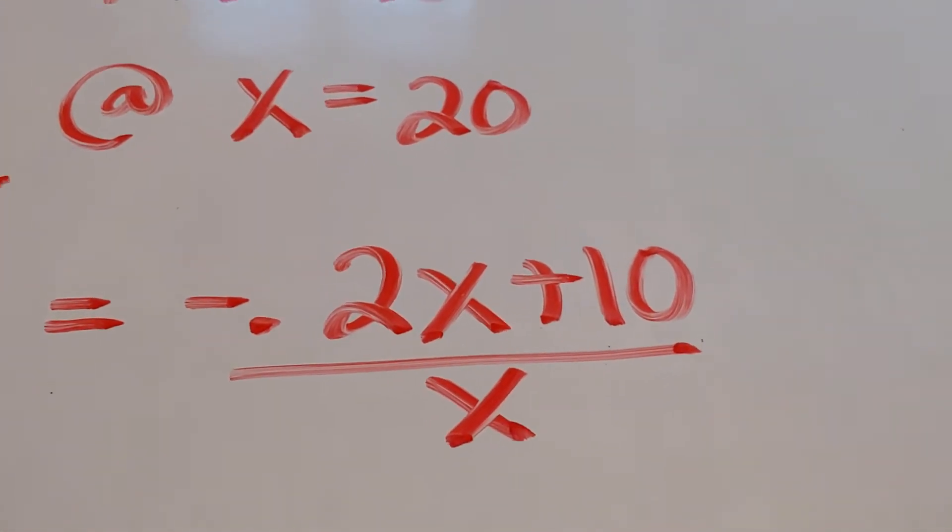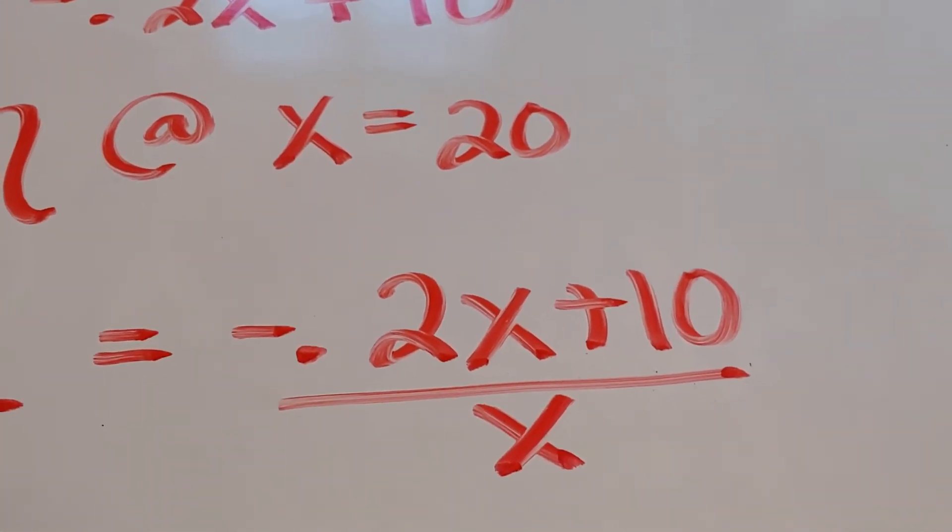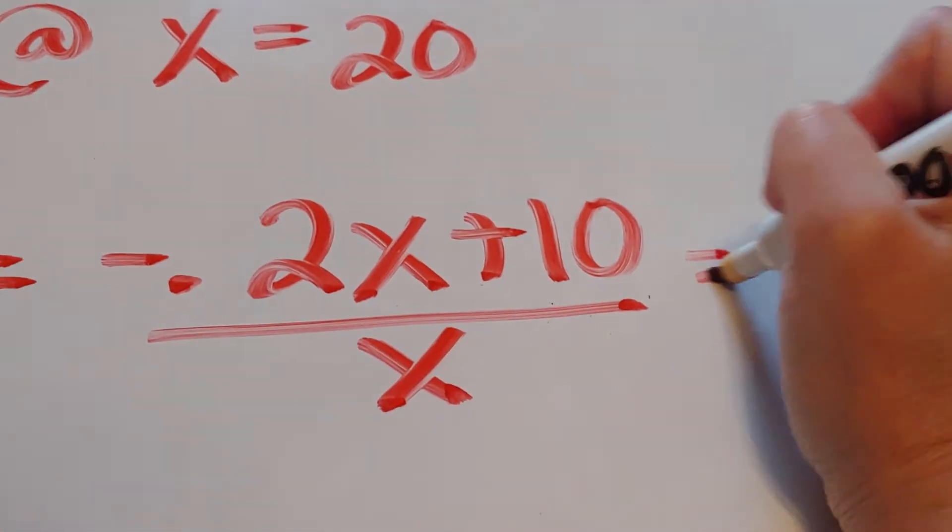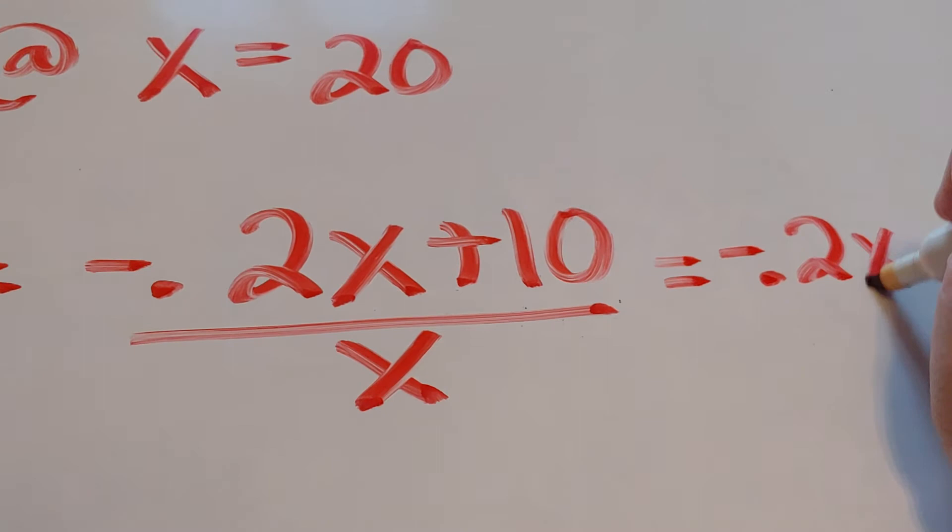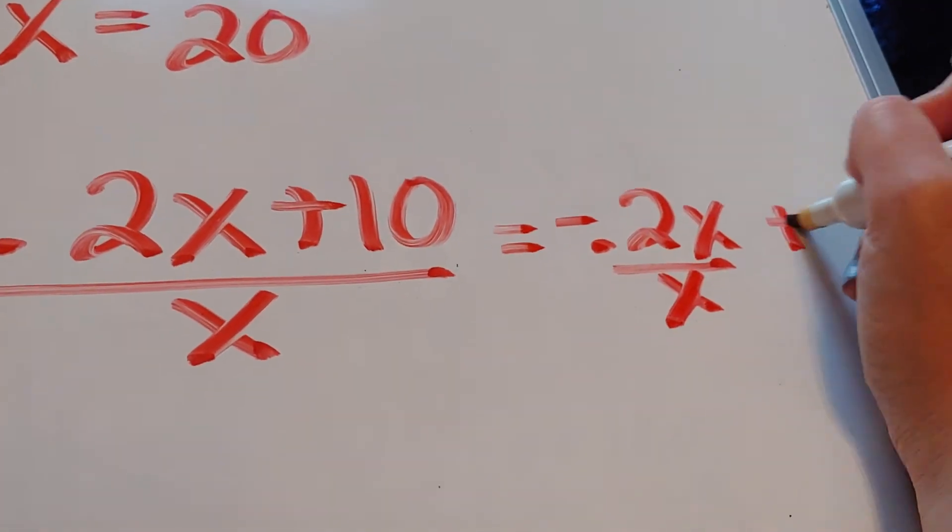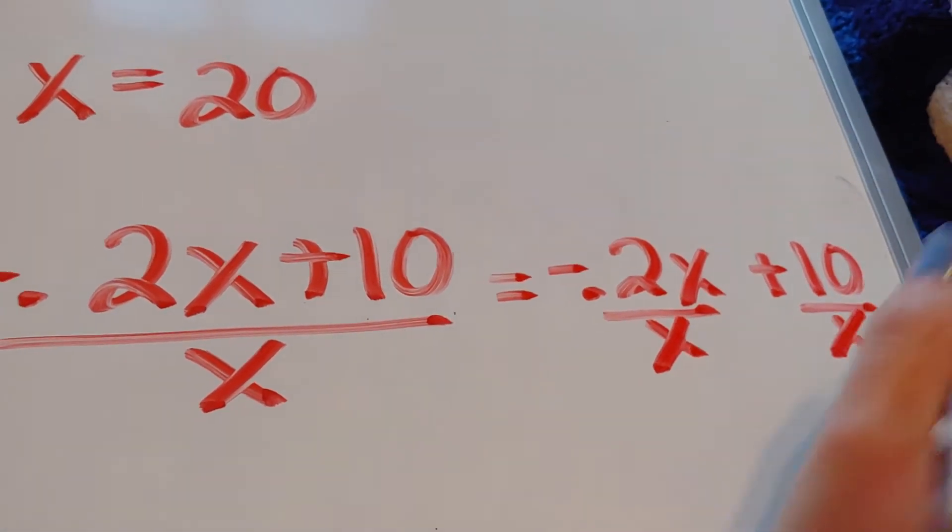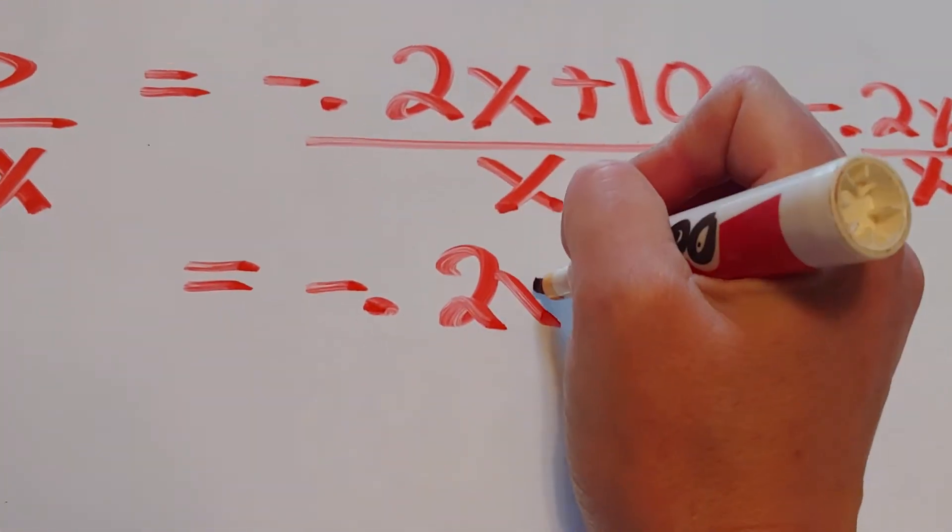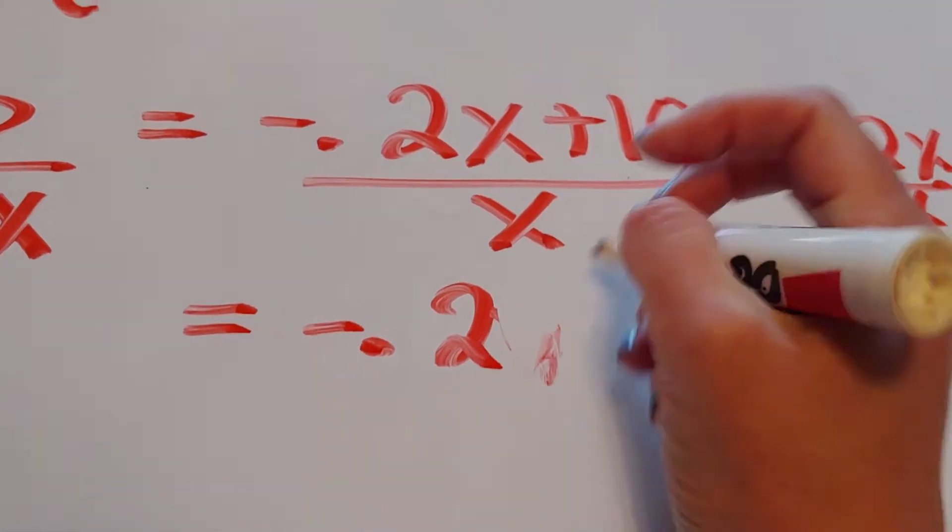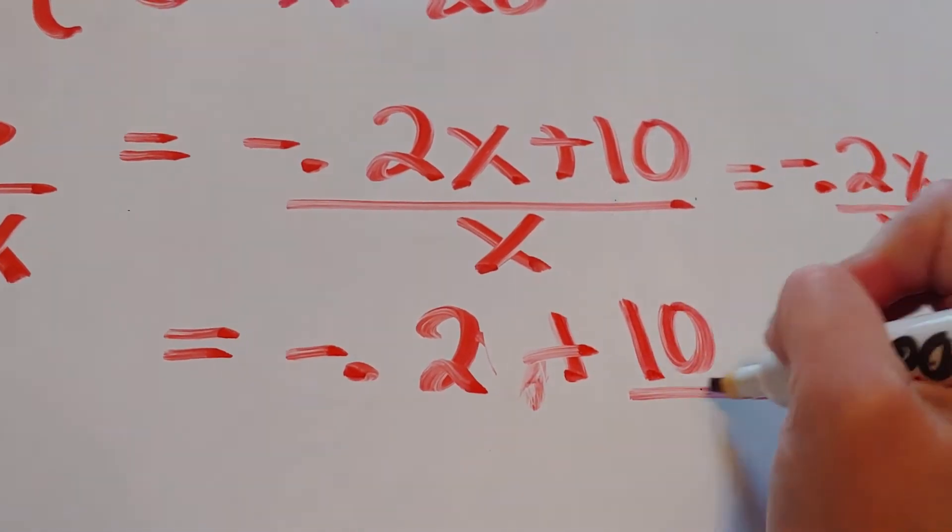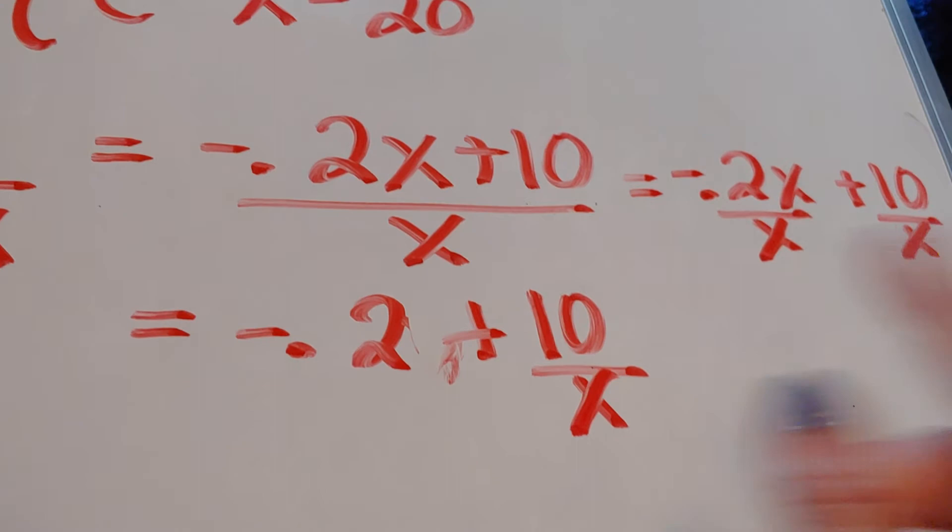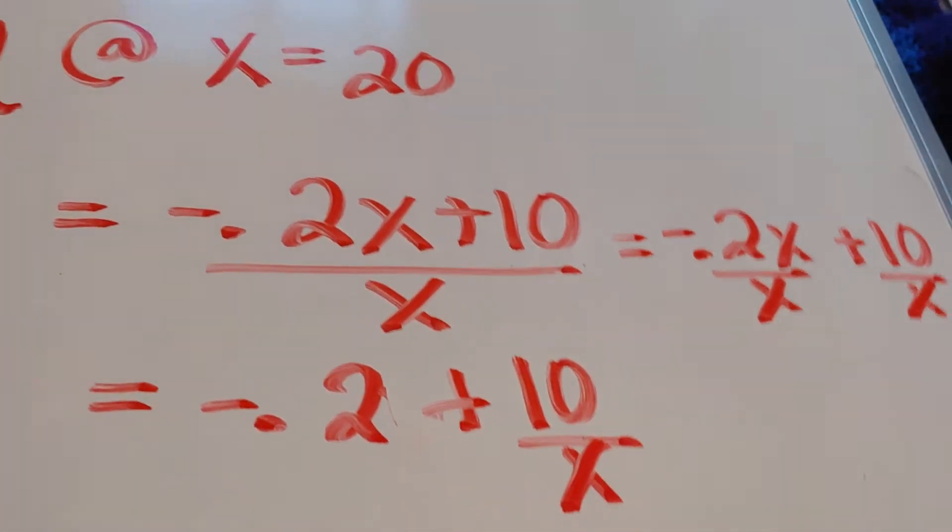Now we could try and rewrite this if you wanted to. So one way that you could rewrite it is you could divide each piece of the top by x. So if you liked, you could rewrite this as negative 0.2 plus 10 over x. So it's up to you if you want to write it this way or if you want to write it this way. It's really just kind of what you prefer.